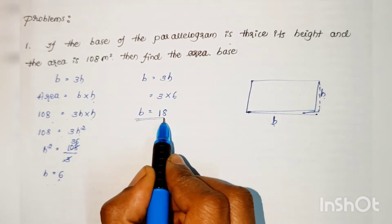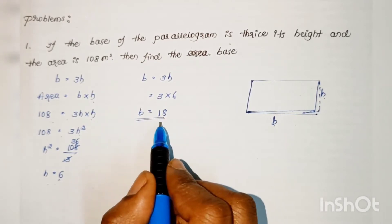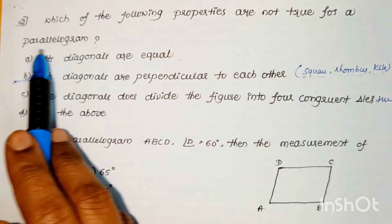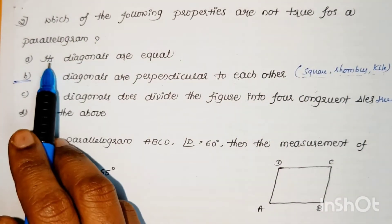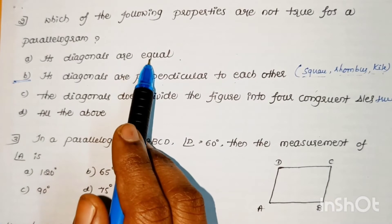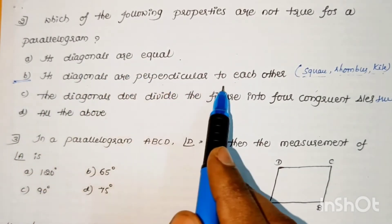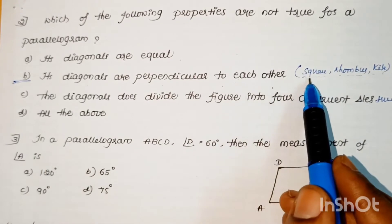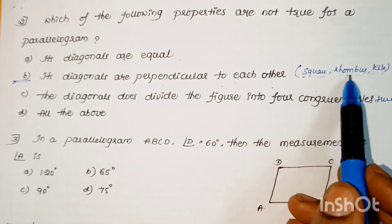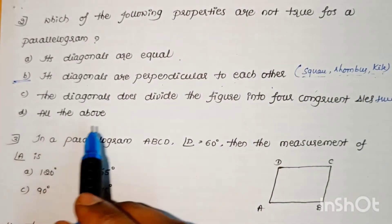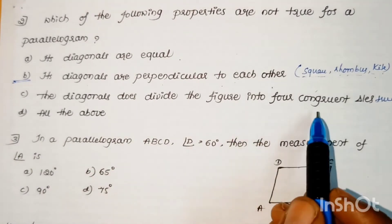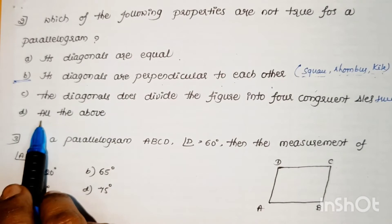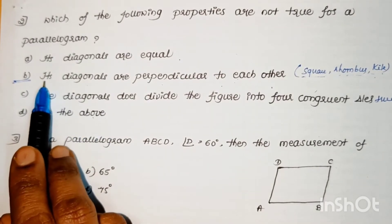Problem: Which property is NOT true for a parallelogram? (A) Its diagonals are equal — true. (B) Its diagonals are perpendicular to each other — this is not true, since perpendicular diagonals belong to squares, rhombuses, and kites. (C) Its diagonals divide the figure into four congruent triangles — true. Since option B is false, the answer is option B.